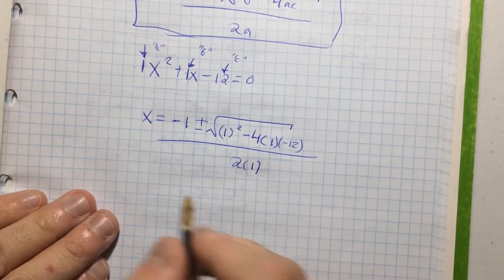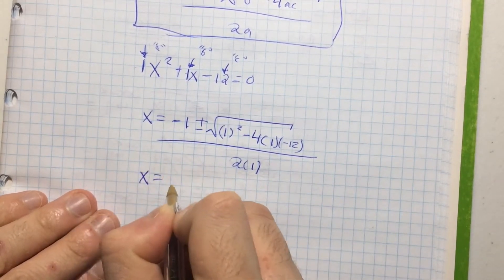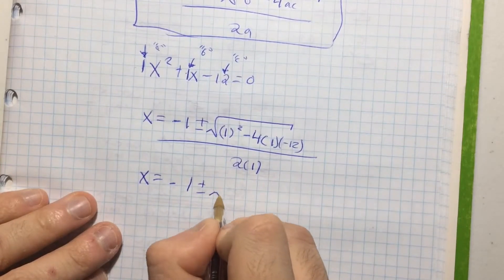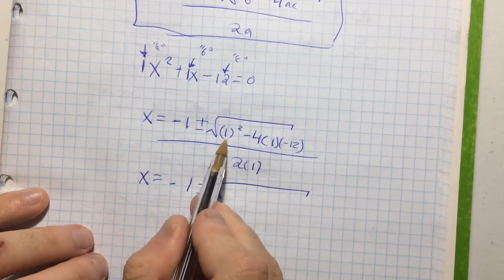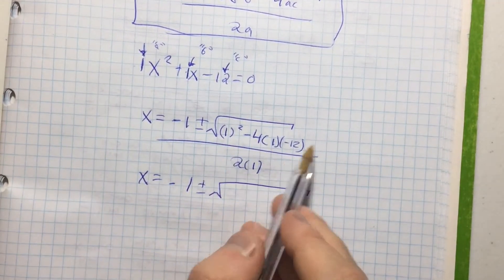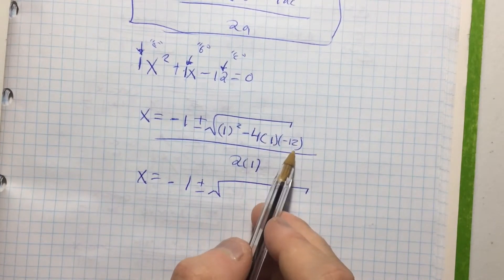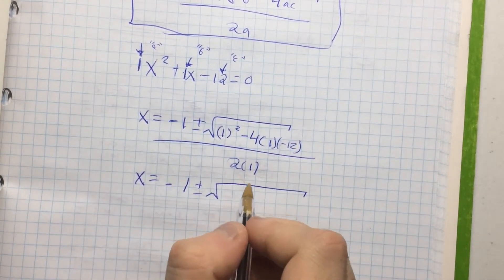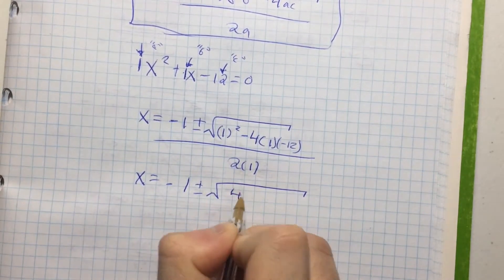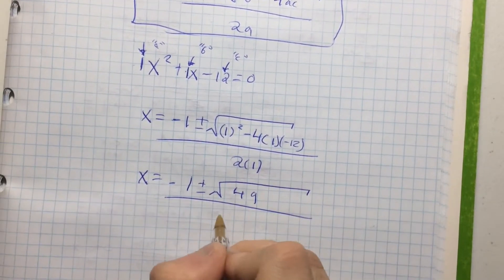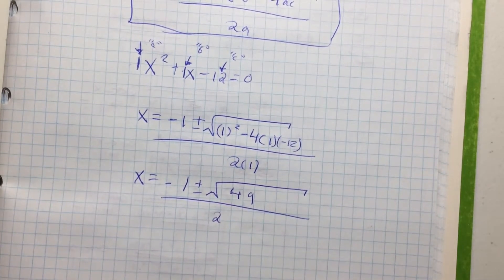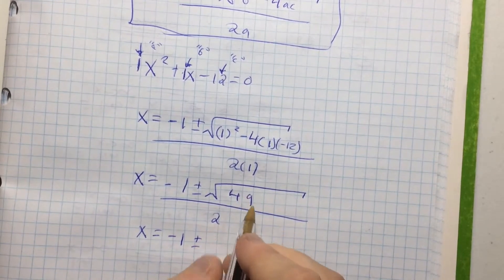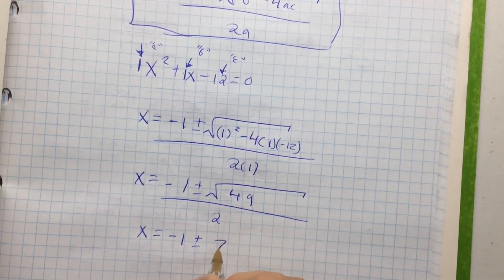So, what do you do next? Well you keep simplifying. You say that x is equal to negative 1 plus or minus the square root of 1 minus 4 times minus 12. Well minus 4 times minus 12 is 48, 4 times 12 is 48, so 1 plus 48, well that's the square root of 49 over 2, because 2 times 1 is 2. So now that x is equal to negative 1 plus or minus, what's the square root of 49? Well that's 7, all over 2.